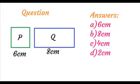Question. A side of the square is 6 cm. Length of the rectangle is 8 cm. Answer choices: a) 6 cm, b) 8 cm, c) 4 cm, d) 2 cm.